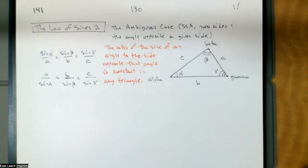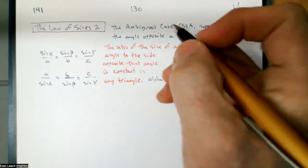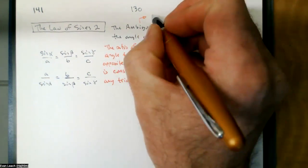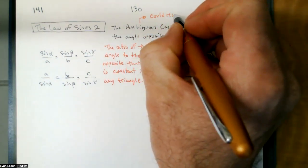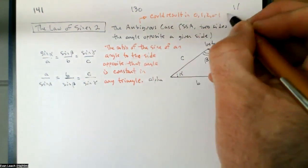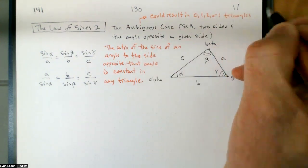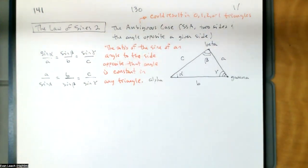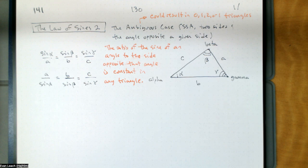The ambiguous case is ambiguous because the given information could result in zero, one, two, or one triangle. That's what makes this case ambiguous. I say one twice because the first one is a right triangle, and the one at the end is one obtuse triangle. I can give you a set of information for which no triangle exists.